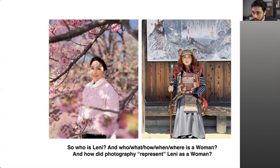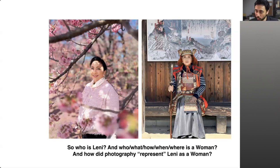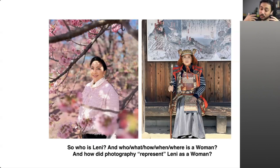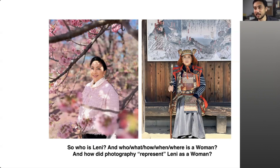If we stick with the questions: who is Lenny? And what, how, when, where is a woman? It's not a trick question, but try to think about it. When we ask what is a woman in the conversation of gender, it's not just a matter of what — it's how is a woman, who is a woman, when is a woman, and where is a woman. The third layer: how did photography represent Lenny as a woman? You have to make that connection — it's a photograph, it's indexical. Even if it's indexical, it plays around with the idea of what we think of representation and gender.